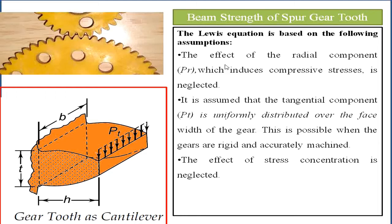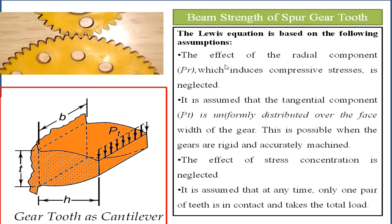Another assumption already noted: only one pair of teeth is in contact and takes the total load. Looking at the figure, though three teeth are in contact with the other gear, the middle tooth is properly in contact, the first tooth is beginning to engage, and the third tooth is releasing. The assumption is that only one pair of teeth takes the entire load.